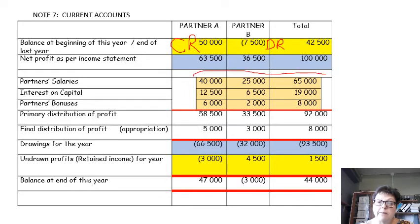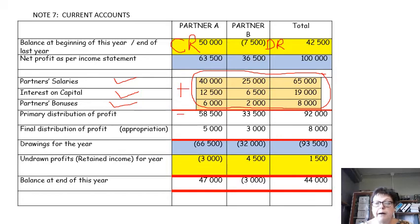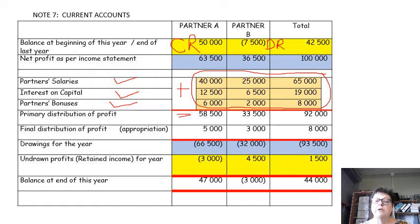Before we come to net profit as per income statement, we first have to check what the partners earned from the partnership. You know that partners can earn a salary — we will have to give you this amount or you must be able to calculate it. The same applies to interest on capital, and bonus. You need to add these amounts to get your primary distribution of profit. So primary distribution consists of salaries, interest on capital, and bonuses.